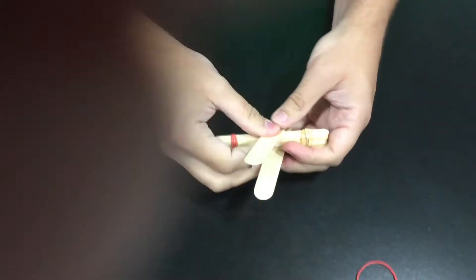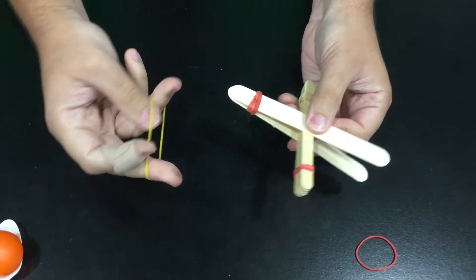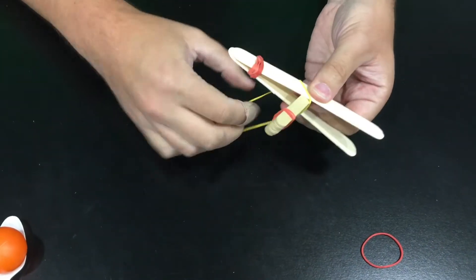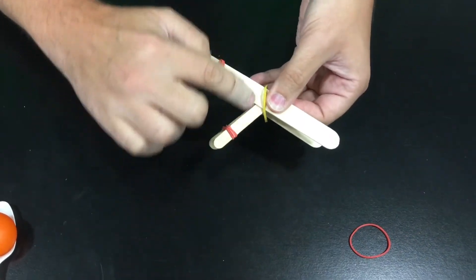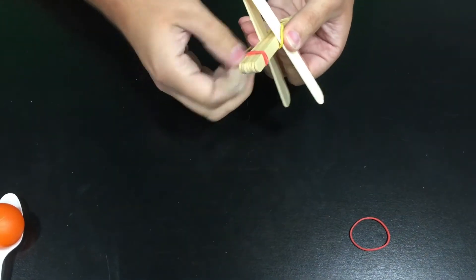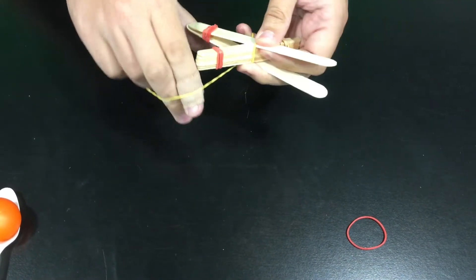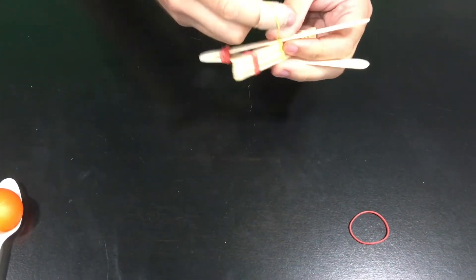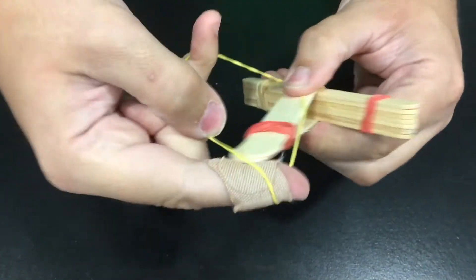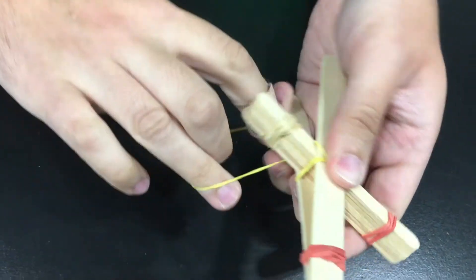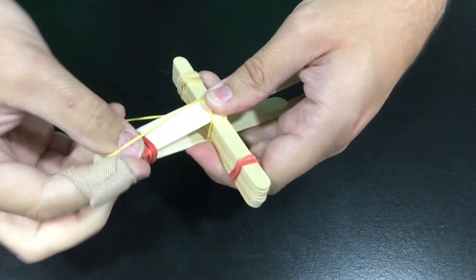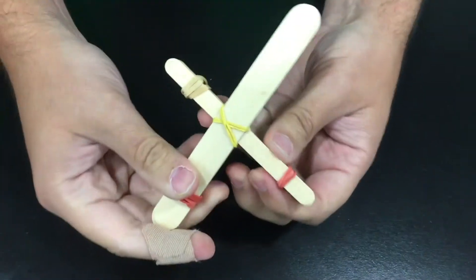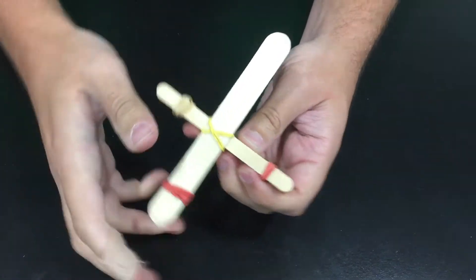You're going to take another rubber band and go to the center and wind it around so it makes a cross, or an X I should say. That's going to hold the craft sticks to your larger popsicle stick or tongue depressor. All right, now that you've got that done.